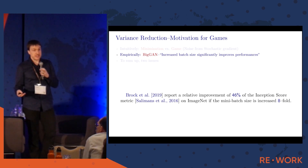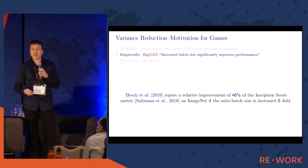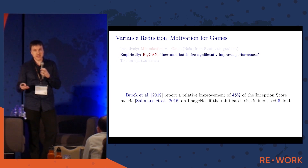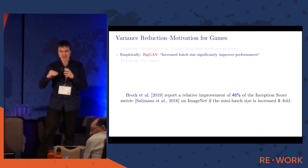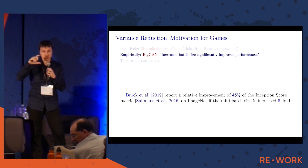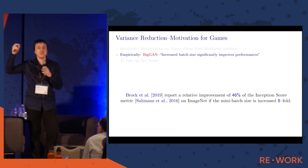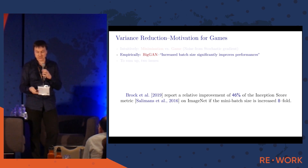There is also empirical evidence that noise is an issue. A paper at ICLR 2019 introduced BigGAN, which had very impressive results on ImageNet. One of the main contributors to improved performance was simply using bigger mini-batches. When you increase the mini-batch size, you decrease the noise of the mini-batch gradient relative to the full batch gradient. So that's also an indicator that noise reduction is relevant.